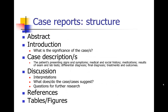Case reports have a structure very similar to an original research manuscript, with some differences. You'll usually have an abstract. The introduction section says what's the significance of the cases you've identified. Then you give a description of the cases — presenting signs and symptoms, the medical and social history, what medications they were taking, results of exams and lab tests, the differential diagnosis, the final diagnosis, treatments given, and outcomes. Then you give a discussion where you interpret the cases: what do they potentially suggest, and what are the questions for further research? Usually case reports raise a whole host of questions for future research. And then you'll have references and usually some tables and figures.